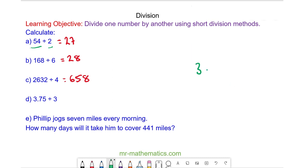For question D we're going to write 3.75 inside of the box. We're going to line up the decimal point and the 3 goes on the outside.